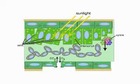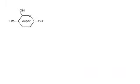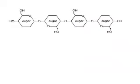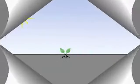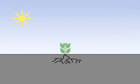Once the sugar has been made, it is transported away down another set of pipes called phloem. The sugar molecules can be joined together into long chains called cellulose. Cellulose is the building material plants use to grow bigger.